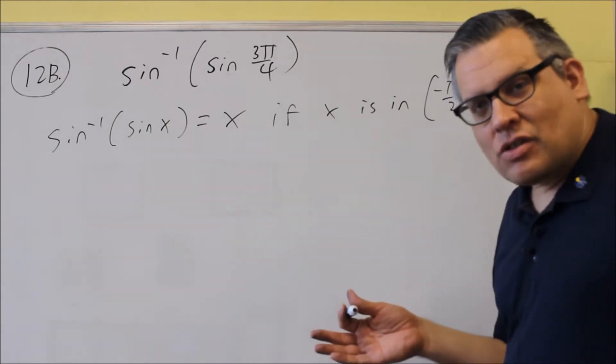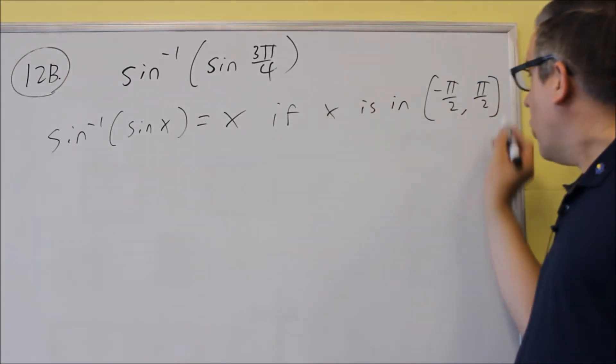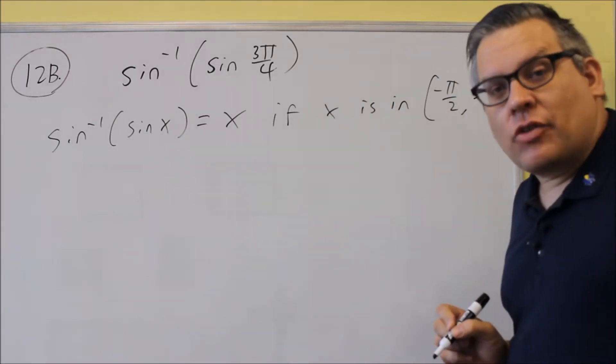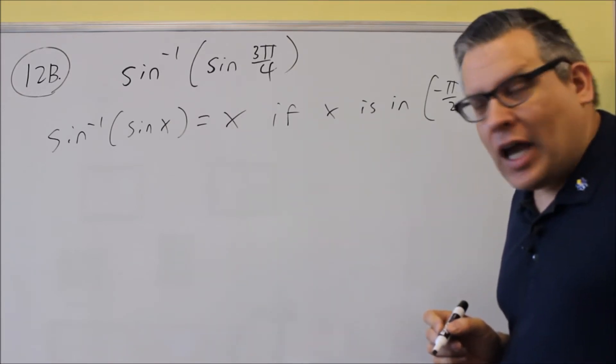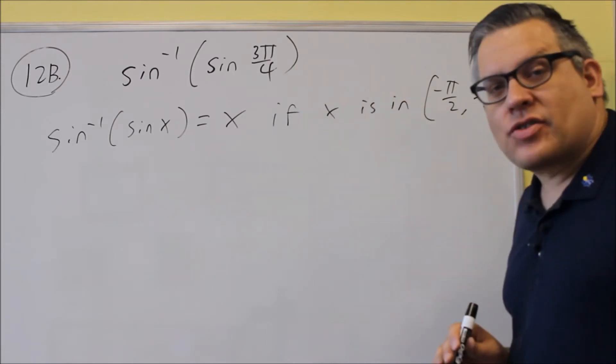Now in this case 3π over 4 would not be inside the interval because 3π over 4, that's three-quarters, is definitely bigger than one-half. So we know that it's going to fall outside there.